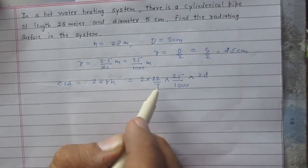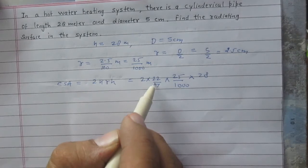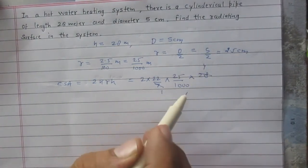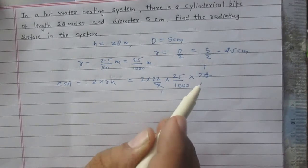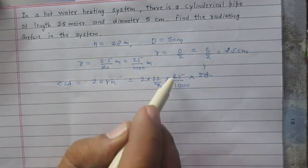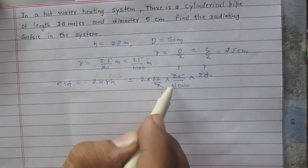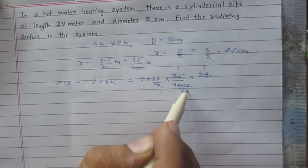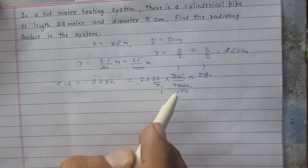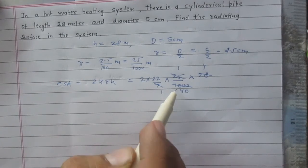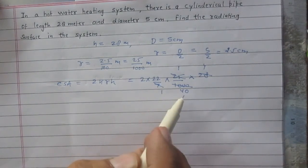We know that 7 into 4 is 28, so 7 cancels. 25 can be reduced as 25 multiplied by 40 is 1000, so it is 1 upon 40.